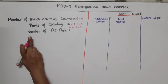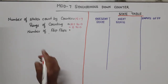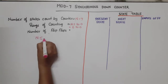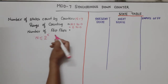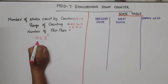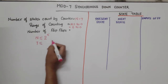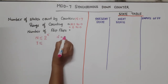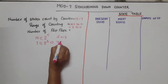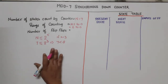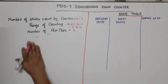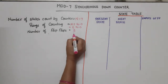Now, how many flip-flops are required? We check the condition that N should be less than or equal to 2 raised to the power of small n, where small n is the number of flip-flops. Putting in values, capital N is 7 and if n equals 3, then 2 raised to 3 is 8. Since 7 is less than 8, the condition is satisfied, so 3 flip-flops are required.